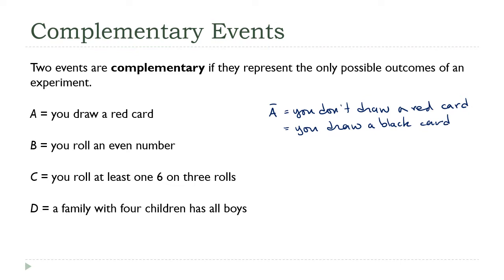How about B? B is you roll an even number. The complement would be you don't roll an even number, which is the same as you roll an odd number. In each case, B and the complement, A and the complement, they cover all of the possibilities when you put them together.